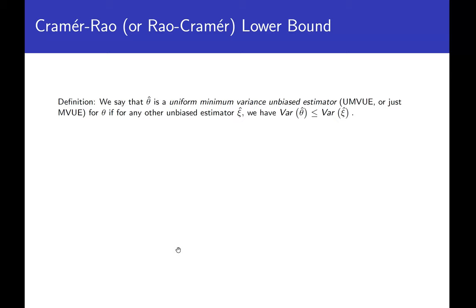We've spent some time talking about estimator quality. One of the things we just finished discussing is finding the actual minimum variance for certain sets of estimators — very specific types of estimators, rather than finding a constant that minimizes the variance. In general, this is a difficult problem. So this video will go through a proof of an inequality that helps us determine whether an estimator has a variance as small as possible.